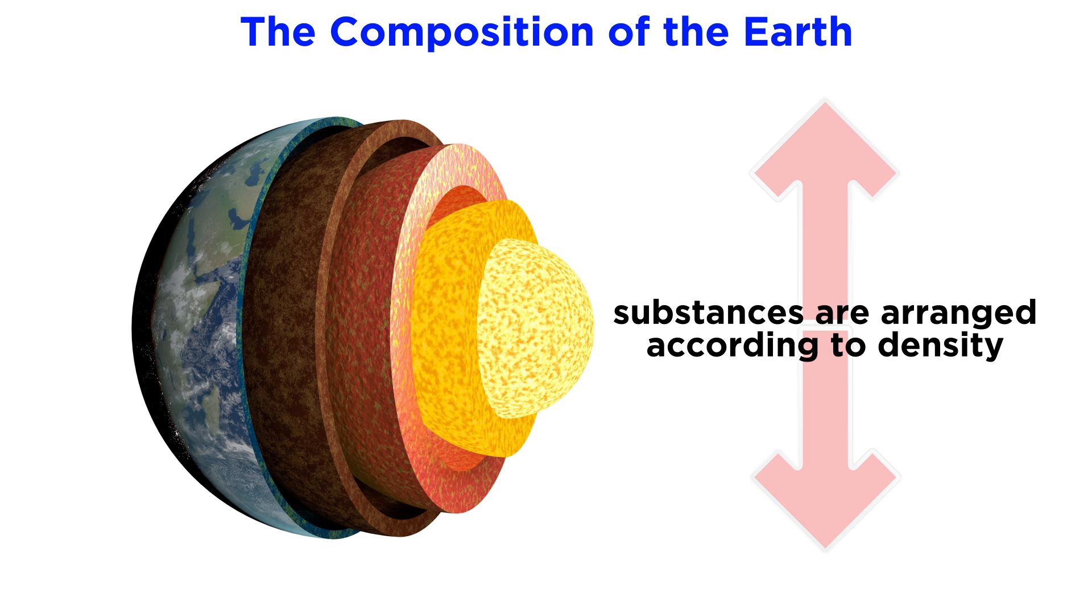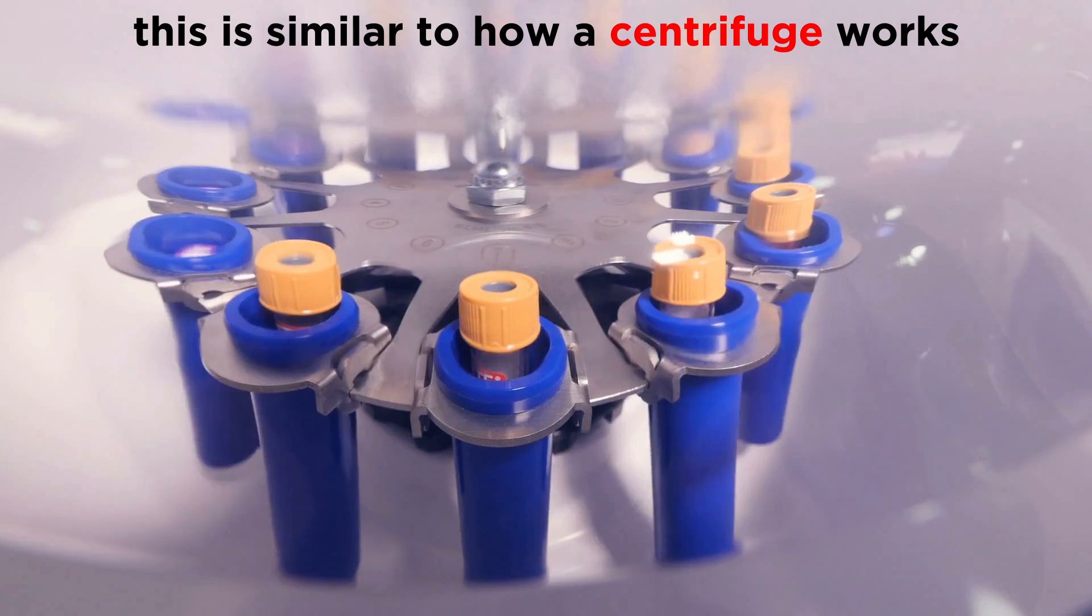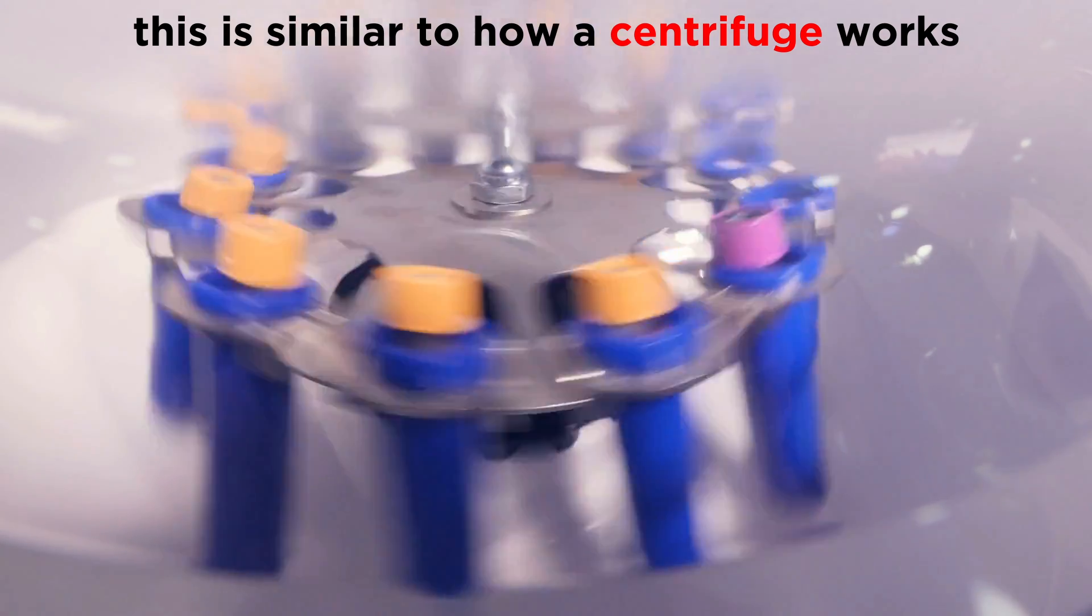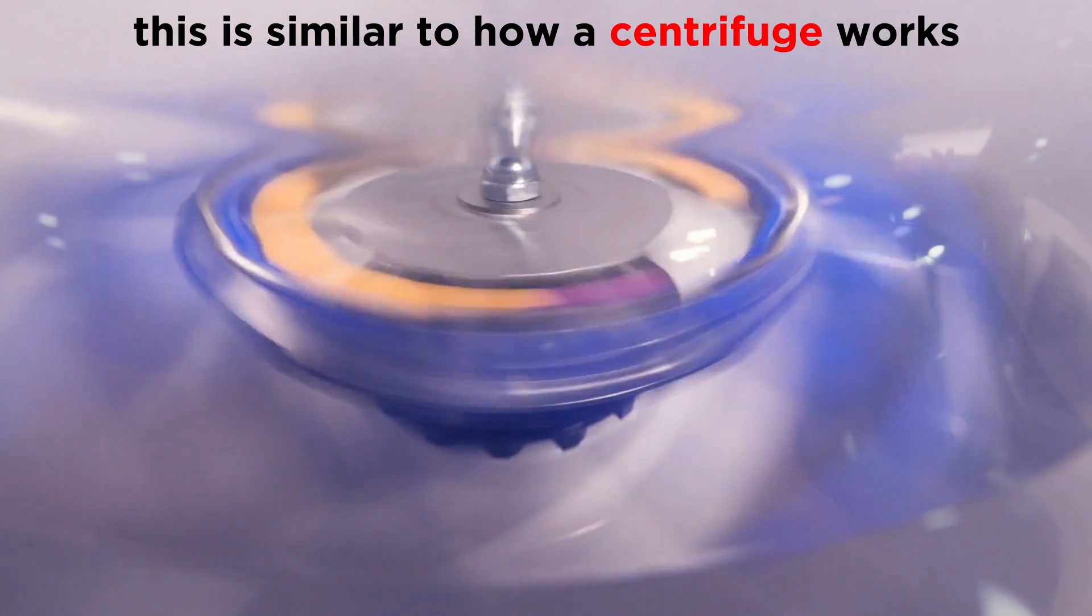So we can see that density really is the determining factor in terms of the distribution of substances. This phenomenon regarding the separation of materials by density is called differentiation, and it happens in large bodies of molten material, like newly formed planets, just the way that substances separate by density in a centrifuge.